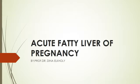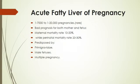Acute fatty liver of pregnancy has an incidence of 1 in 7,000 to 1 in 20,000 pregnancies. It is rare with bad prognosis for both mother and fetus. It increases maternal mortality rate up to 20 times normal, while perinatal mortality rate is also increased 20 to 30 times normal.